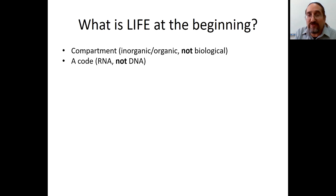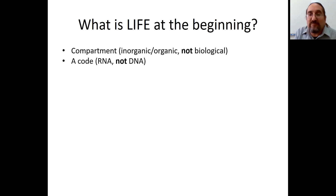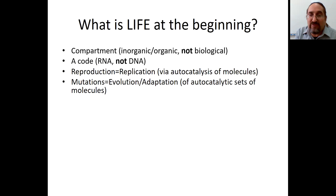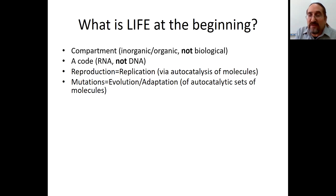We need some assumptions about the beginning. One assumption is that compartments are not yet biological — they could be inorganic or organic, but certainly not controlled by the code yet. There is a code at the beginning: RNA, and not DNA. We assume the code came before biological compartments. Replication at the beginning is not with the help of a code, but via autocatalysis of molecules. Mutation and evolution are also of the autocatalytic sets of molecules, not of the code, because the code is not there yet.